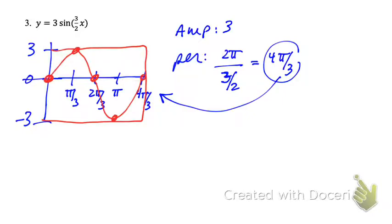Okay, now our domain again negative infinity to infinity, the range of this one goes from negative 3 to positive 3, and I think that's it for this graph.